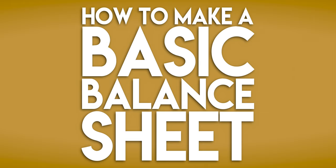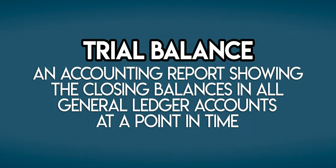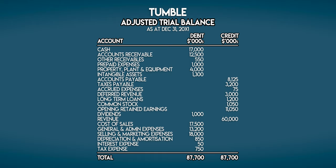To make a basic balance sheet, you first need another accounting report called a trial balance. This shows us the closing balances for every general ledger account at a point in time. Here's a trial balance for a dating app called Tumble. It was run at the end of Tumble's financial year, December 31st, and it's an adjusted trial balance because all adjusting entries have already been posted. We can see all of Tumble's accounts and balances. Debits are on the left and credits are on the right. At the bottom, we can see that the debits total to $87,700,000, which matches the total credits exactly. This means that Tumble's trial balance is in balance, which is very important because if the trial balance is in balance, then the balance sheet also has to balance.